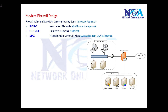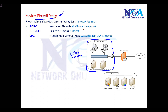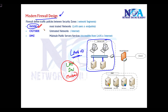Most basic firewall designs include three components — three different network segments. The first is the internal LAN, where all end users, endpoints, and anyone accessing services from servers are connected. This is called the inside or trusted network. The second is the outside network, typically referring to the internet, which is untrusted.